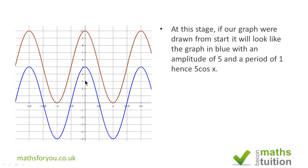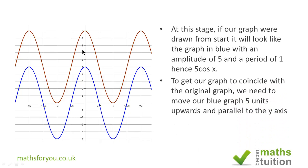But to get to the original graph we need to move our blue graph or shift our blue graph vertically upwards by 5 units. Which means that the graph given to us originally is of the form 5 plus 5 cos x.